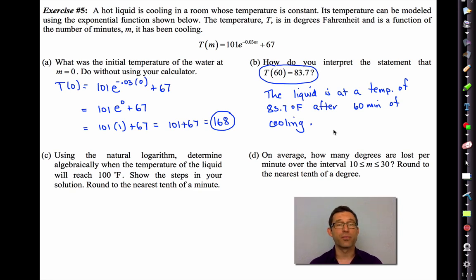Letter C. Using the natural logarithm, determine algebraically when the temperature of the liquid will reach 100 degrees Fahrenheit. I think it's going to be less than 60 minutes. But show the steps in your solution. Round to the nearest tenth of a minute. All right. Let's do it. I might have to write a little bit small here. So we're going to try to solve this equation. 100 = 101e^(-0.03M) + 67. Now it may look daunting at first. But again, you just have to reverse what's happened to M. M has been multiplied by negative 0.03, exponentiated, multiplied by 101, and then 67 has been added. So the first thing I'm going to do is get rid of that 67.